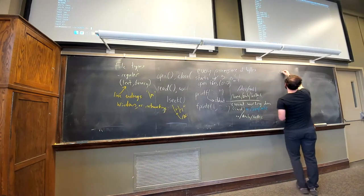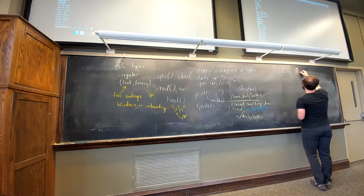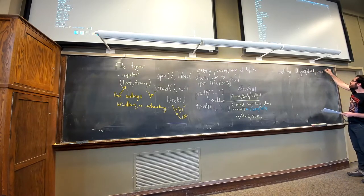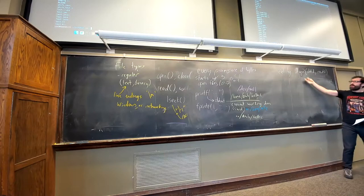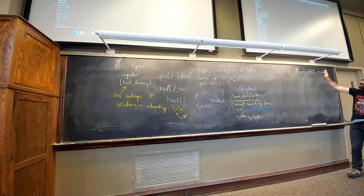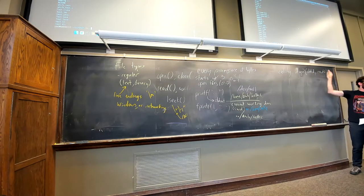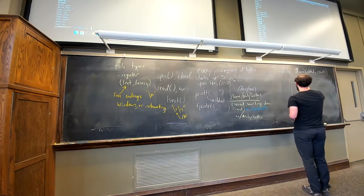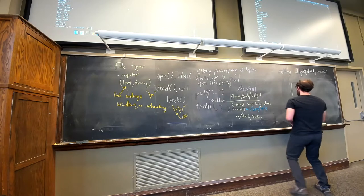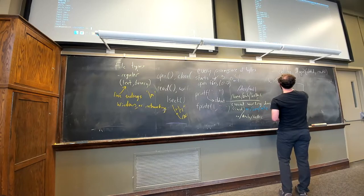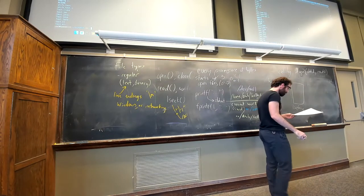The answer is it calls the dup2 system call to take an old file descriptor and duplicate it onto a new file descriptor. For example, with our file descriptor table — say something like this where our standard out was going to some file A, and we had some other file open.